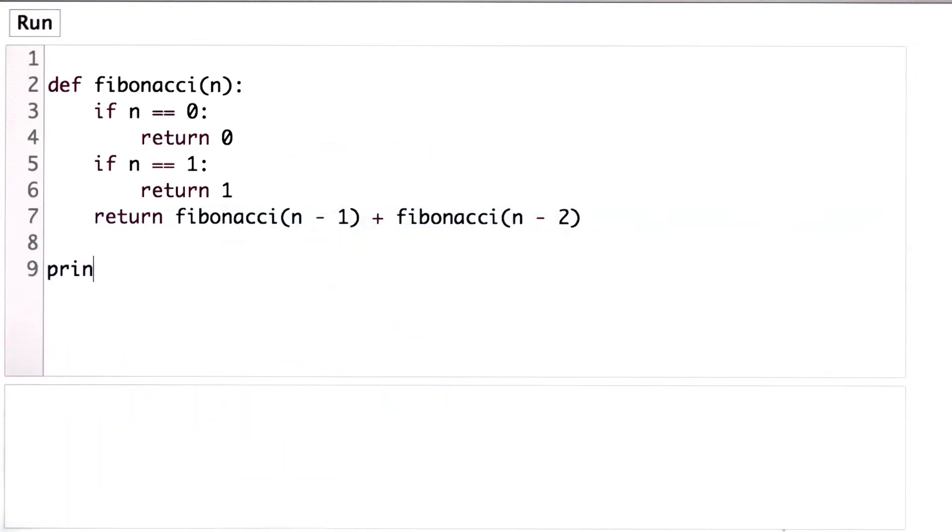So we'll print the result of Fibonacci 0 first. We should get 0, which we do. We'll try Fibonacci 1, we get 1. So we've seen our two base cases.